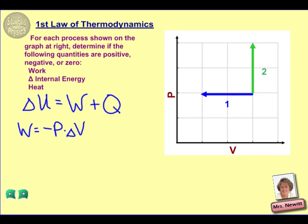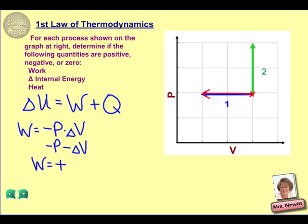Because we have a graph, we can see what that change in volume is. Notice that for process one, we are beginning here and moving to the left, which gives us a negative value for delta V. So if we have a negative value for delta V multiplied by the negative in the equation, then work must be a positive value. Because our gas is decreasing in volume, work is positive.